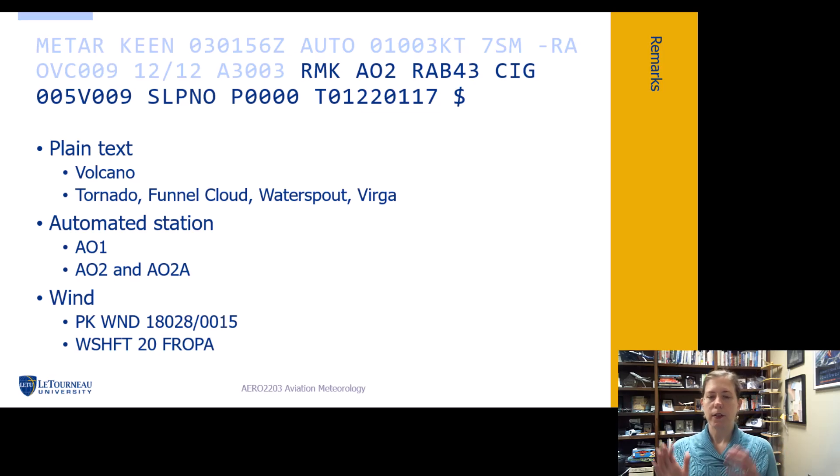Look at some other parts. Sometimes we got a little plain text going on and they'll just type it out. So it could be like volcano, tornado, funnel cloud, water spout, virga. I've seen virga listed. I've seen funnel cloud listed on a METAR before.